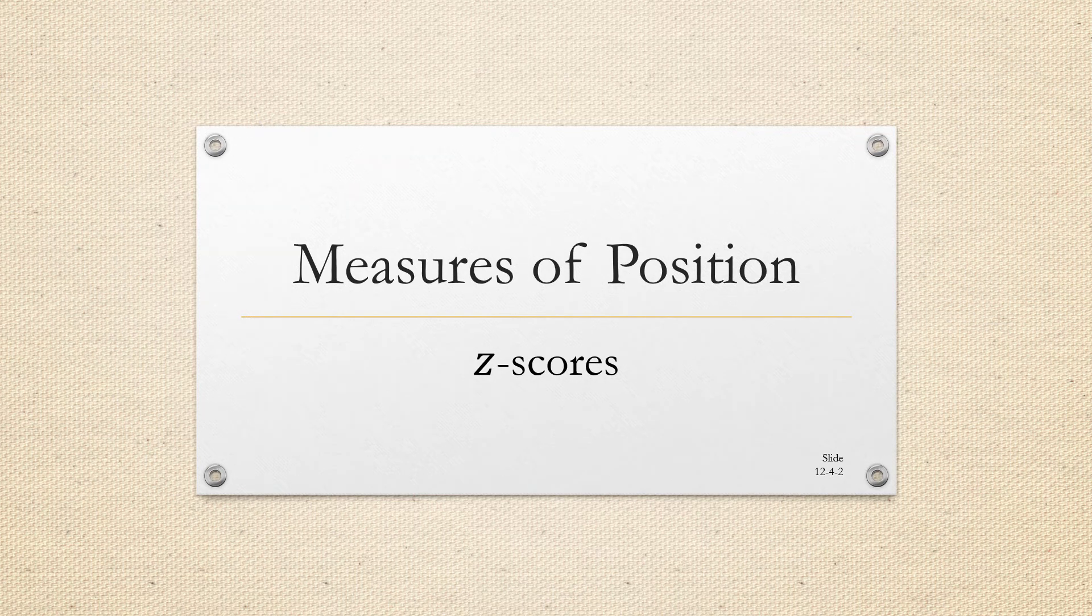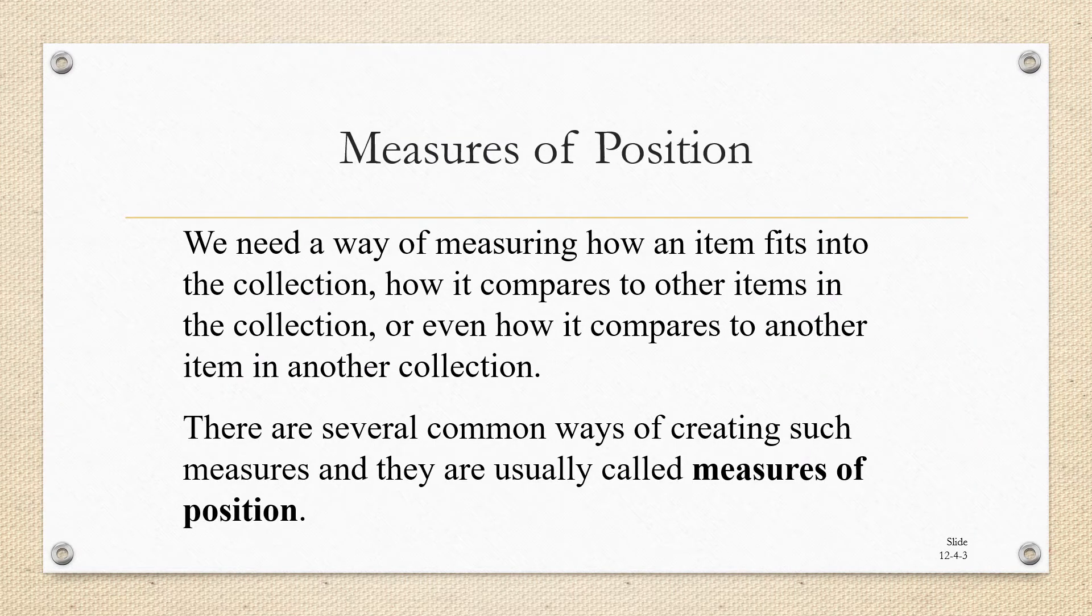In this video we're going to talk about measures of position. One of the most important measures of position is a Z score. Measures of position are important. We need a way of measuring how an item fits into the collection of data and how it compares to another particular item in the collection. There are several common ways of creating such measures and they're usually called measures of position.